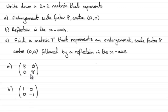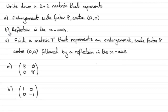In part C, we've got to find a matrix T that represents an enlargement scale factor 8, center 0, 0, followed by a reflection in the x-axis. And in the earlier parts of this question, A and B, we found the matrix that represented the enlargement and the matrix that represented the reflection in the x-axis.